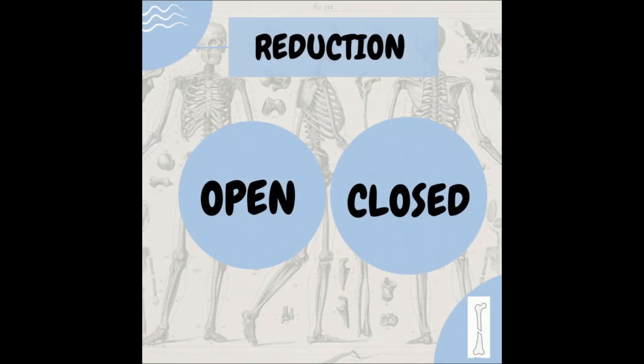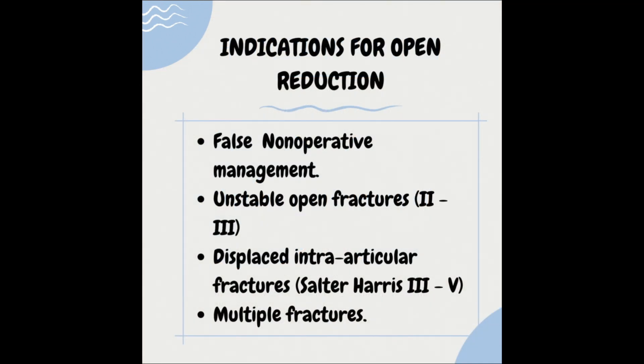There are two methods of reduction: closed, which is non-surgical, and open, which means that you will need surgery for reduction. Most fractures will be managed conservatively with a closed reduction, while some more complicated fractures will require an open reduction. Closed reduction is indicated for all displaced fractures, even those being prepared for internal surgical fixation. The indications for open reduction surgery include failed non-operative management, unstable open fractures, displaced intra-articular fractures, and multiple fractures involving the pelvis, the femur, or the spine.